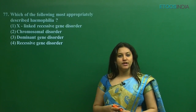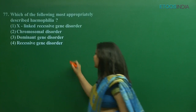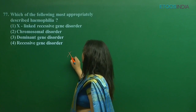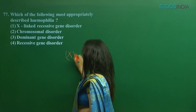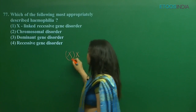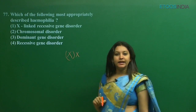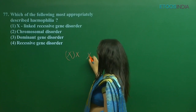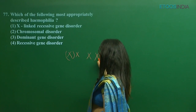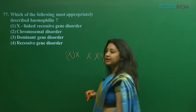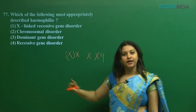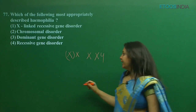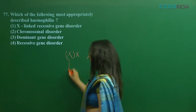That is why the female is a carrier for this condition. If you have a carrier female and you cross her with a normal male, what happens?